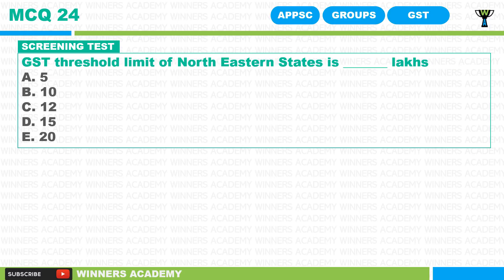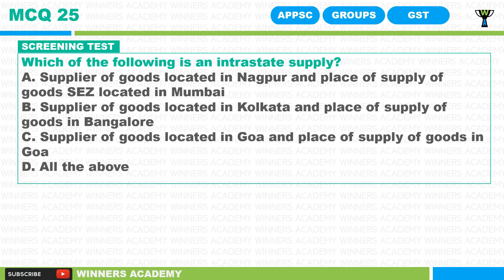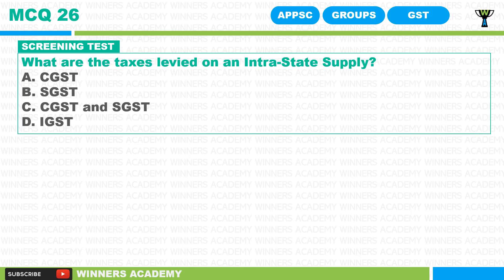What is the GST threshold limit for northeastern states? Is it 5 lakhs, 10 lakhs, 12 lakhs, 15 lakhs, or 20 lakhs, based on turnover in a given financial year? Which of the following is an intrastate supply? Options include: supplier in Nagpur with supply in Mumbai; supplier in Kolkata with supply in Bangalore; supplier in Goa with supply in Goa; or all of the above. What are the taxes levied on an intrastate supply — CGST, SGST, CGST and SGST, or IGST? Which type of tax is GST — indirect tax, excise tax, direct tax, or none of the above?